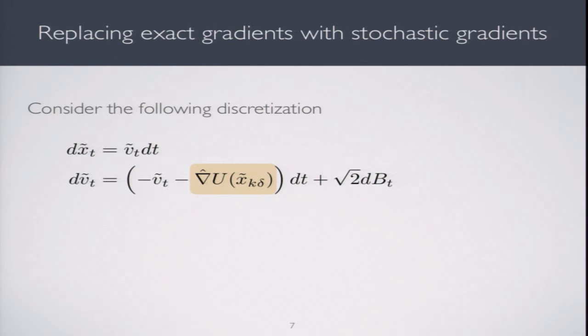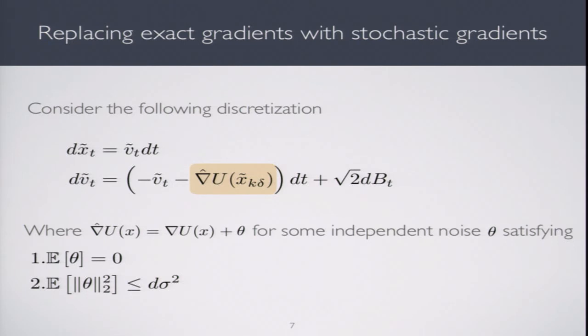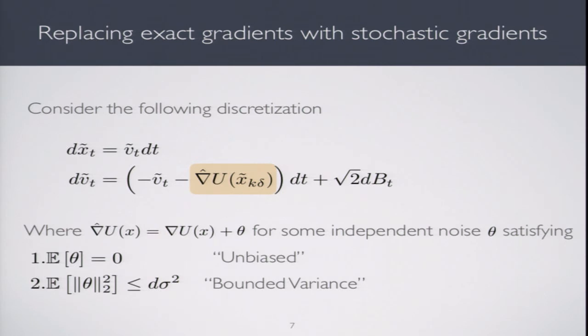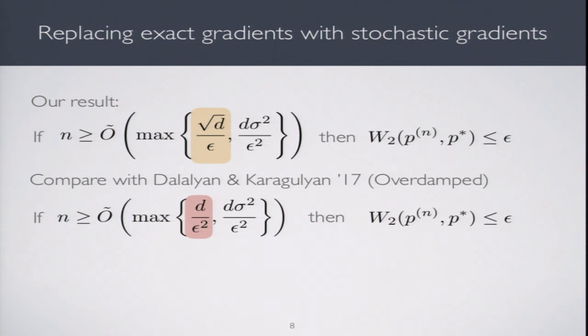Our result extends to the case when you cannot compute the exact gradient. Consider this discretization. Instead of ∇u of x_{k·δ}, now you have ∇̂u of x_{k·δ}, where ∇̂ is a noisy estimate of the true gradient. We assume it is zero mean, unbiased, with bounded variance. Our convergence rate for ε error in Wasserstein distance is: number of iterations needs to be max of √d/ε and d·σ²/ε². Recall the variance of your gradient is d·σ². In overdamped, you need max of d/ε² and d·σ²/ε². The d·σ²/ε² term is the same for both. In the case of very large error, we don't have improvement. However, if σ is very small, we potentially have a speedup over overdamped.